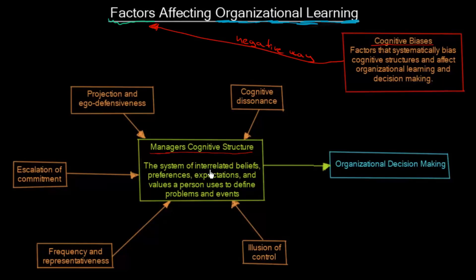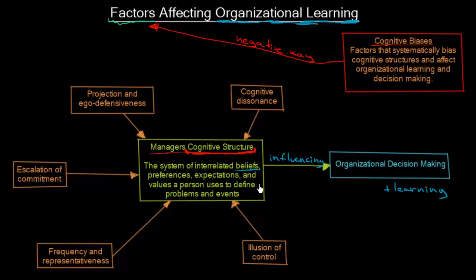The manager's cognitive structure is the system of interrelated beliefs, preferences, expectations, and values a person uses to define problems and events. You can imagine that managers have this sort of cognitive structure — it's your mind, it's what is in there and what is influencing your decision making and your learning. For example, you may have some specific beliefs — maybe you believe that some products are better than others, or that some suppliers are better or worse than others. That is the basic idea of a cognitive structure.